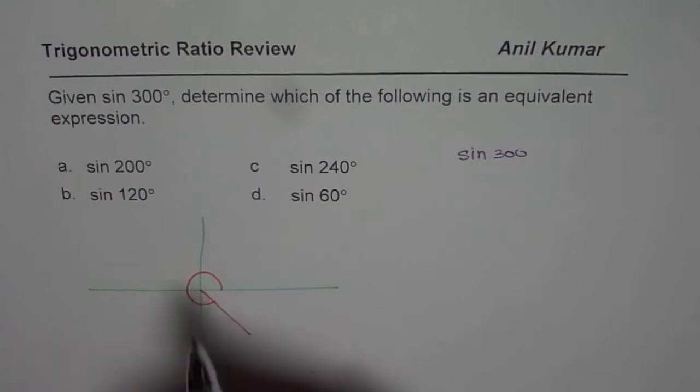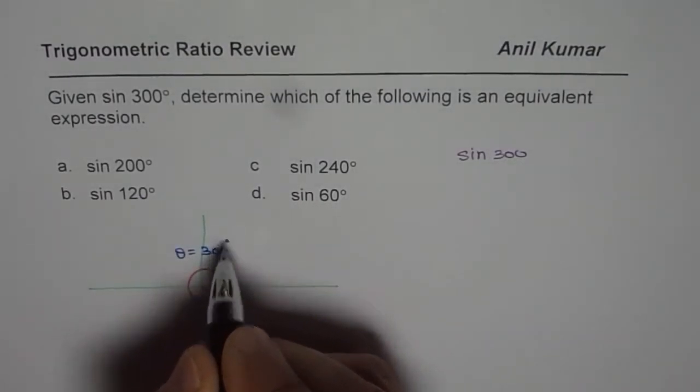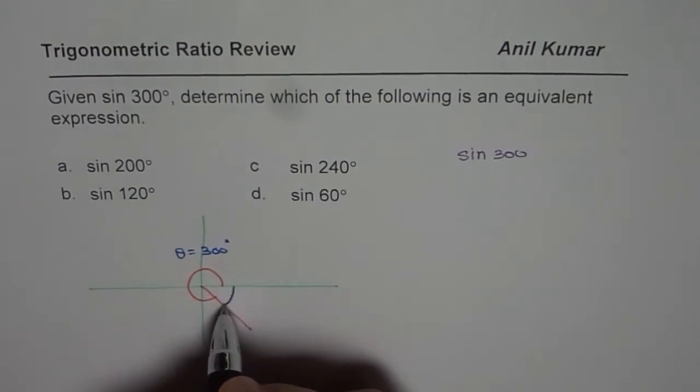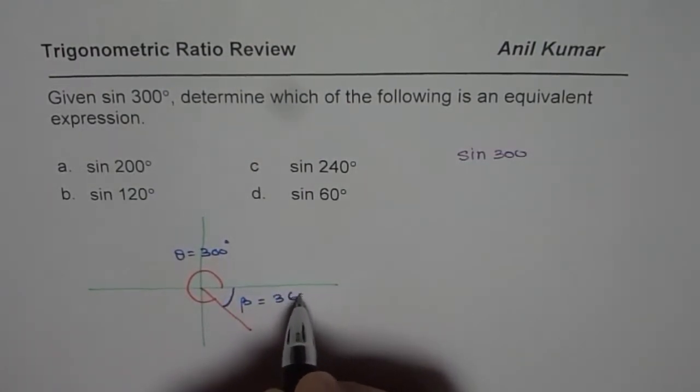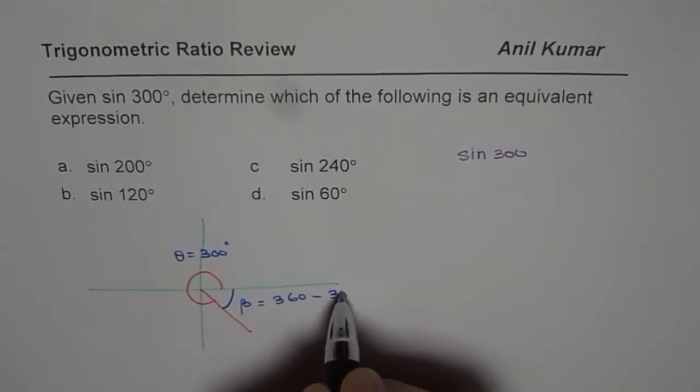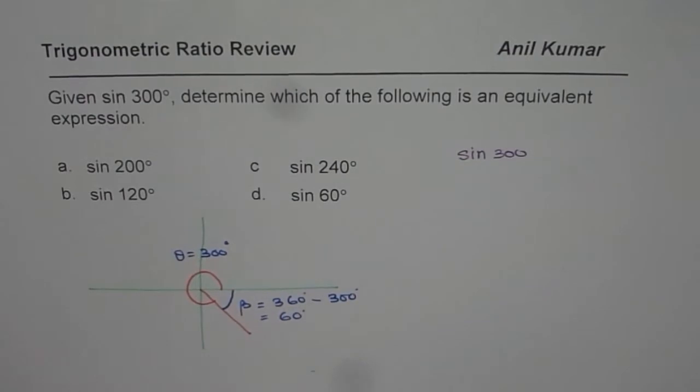So when you have principal angle theta as 300, what is the acute angle? Let's say beta is how much? It is 360 minus 300, which is 60 degrees. That is the first thing which we understand from here.